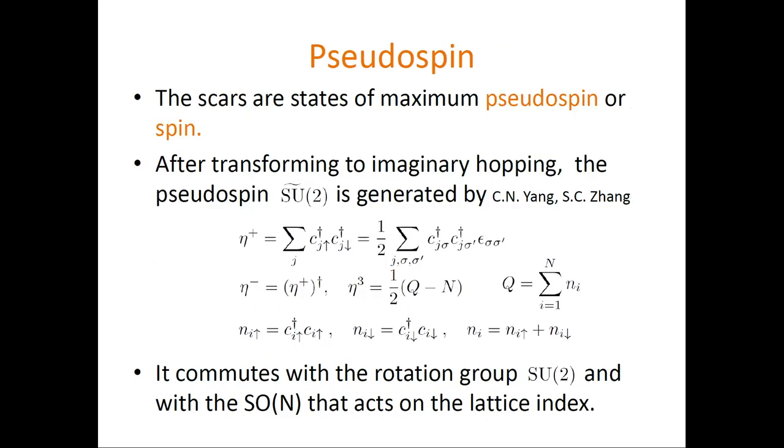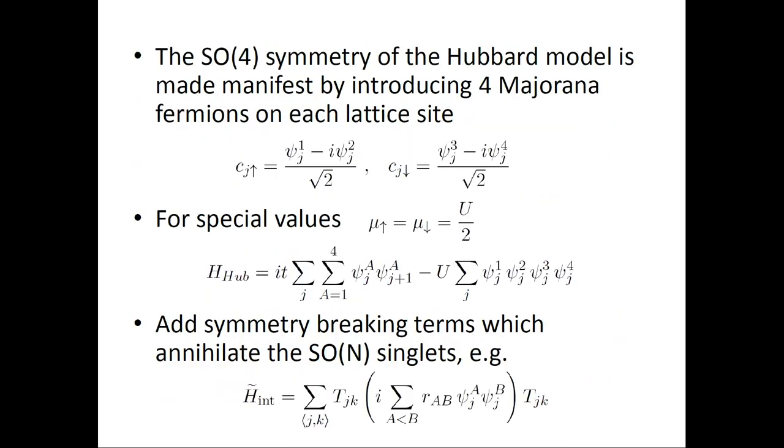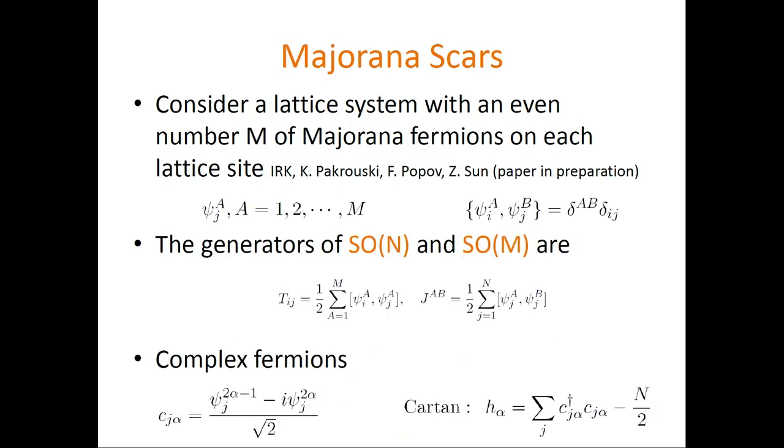So this is work in progress with Kirill Pokrovsky and a very good Princeton postdoc who could join us. This is a plot for the model that I just showed specifically with this T O T interaction. You see the red dots are scars. This is still a pretty small lattice and you see indeed that some of them are exact product states. You see them here at zero entropy and others have still low entanglement entropy.